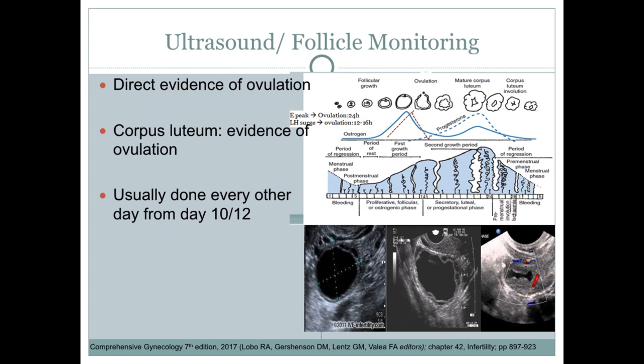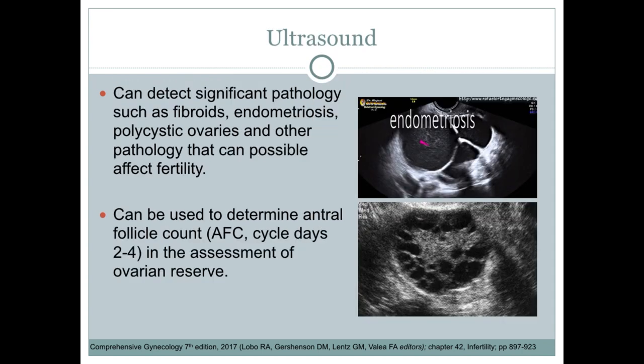Ultrasound or follicle monitoring is a direct evidence of ovulation; one evidence is the corpus luteum. This is usually done every other day starting from menstrual day 10 or day 12. Ultrasound can also detect significant pathologies such as fibroids, endometriosis, polycystic ovaries, and other pathologies that can affect fertility. It can also be used to determine antral follicle count as an assessment for ovarian reserve.